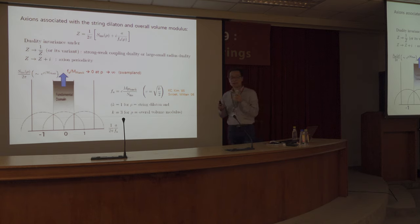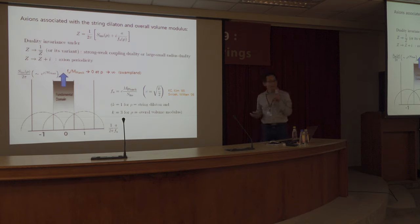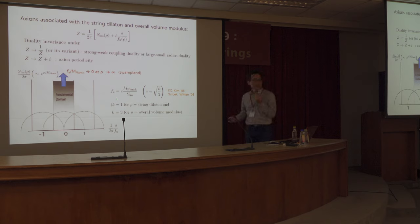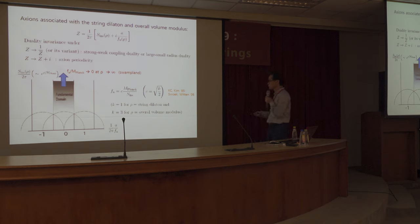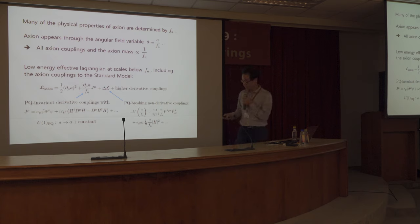There are at least two well-known string-theoretic axions: those associated with the string dilaton and the overall volume modulus. In the weak coupling limit or large volume limit, you can calculate the axion decay constant, and you find that the coefficient c here is actually a moduli-independent constant of order one.